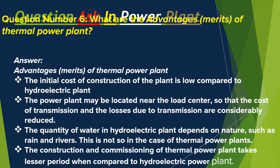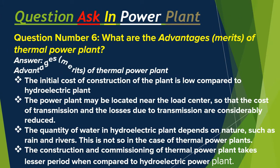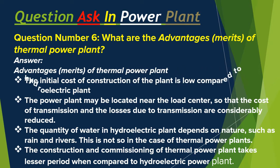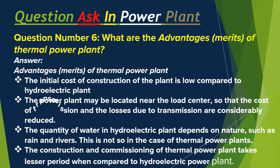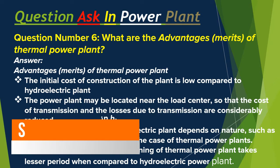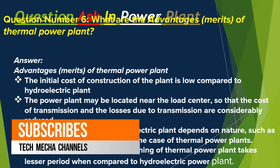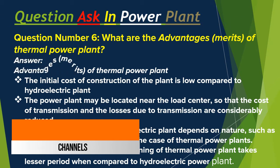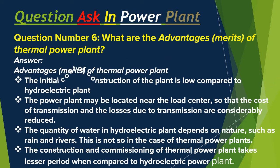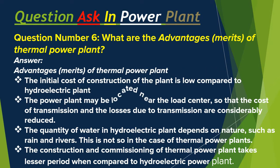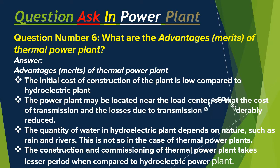Question number six: What are the advantages and merits of a thermal power plant? Answer: The initial cost of construction of the plant is low compared to a hydroelectric plant. The power plant may be located near the load center so that the cost of transmission and the losses due to transmission are considerably reduced. The quantity of water in a hydroelectric plant depends on nature such as rain and rivers — this is not so in the case of thermal power plants.